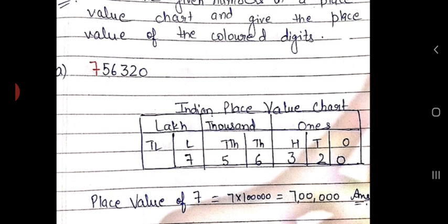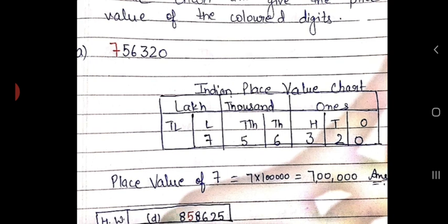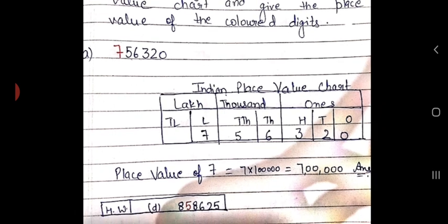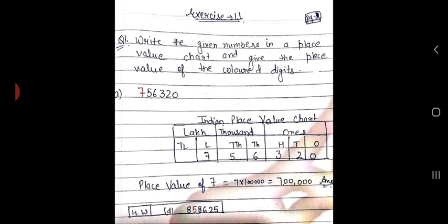If you look at the question, we have also been given the place value of the colored digit. Here the colored digit is number 7. Seven is the face value and its place is lakhs, so the place value of number 7 is 7 lakhs. The D part you are going to do yourself.